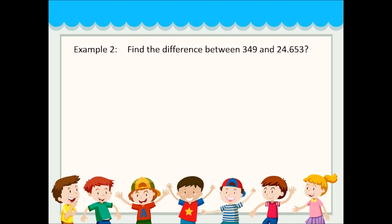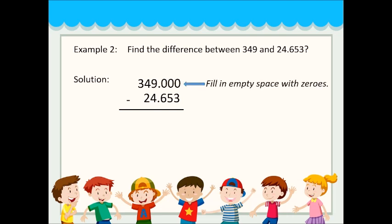Example number two: Find the difference between 349 and 24.653. We have to align and fill in the empty spaces with zeros. Then subtract from left to right, column by column.